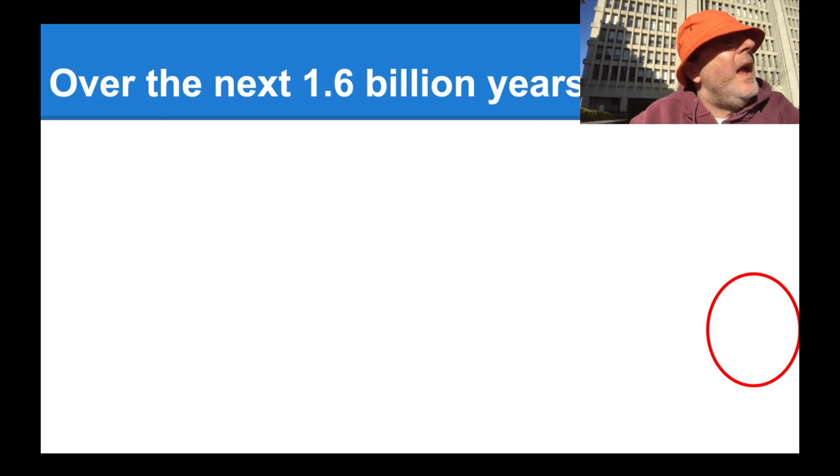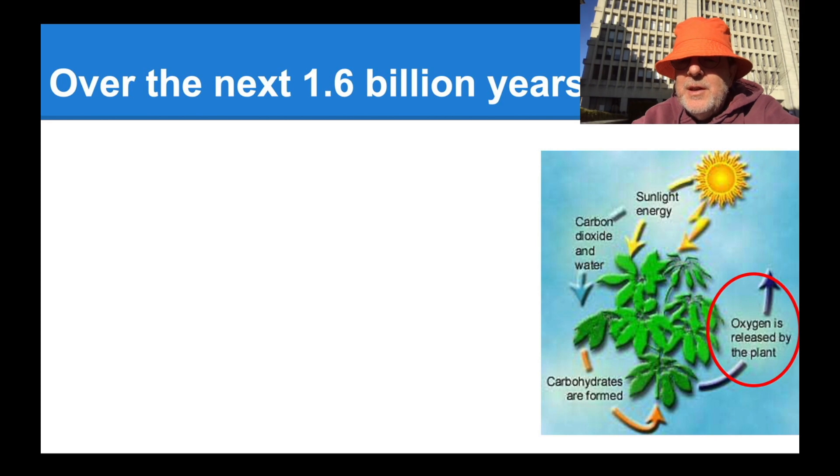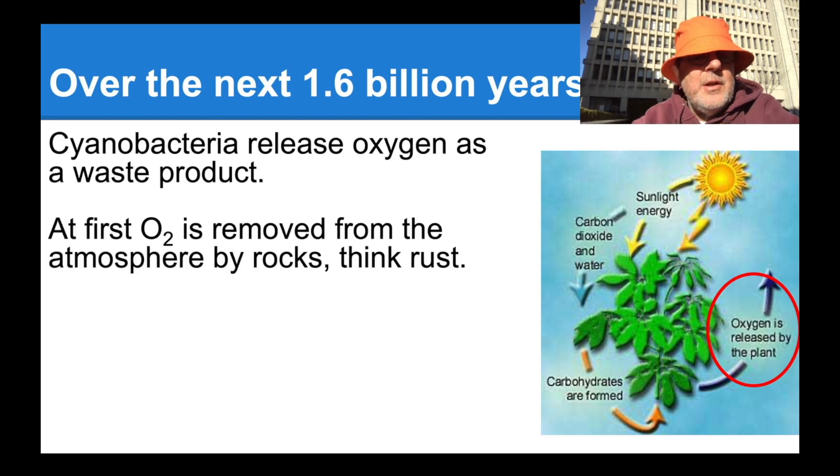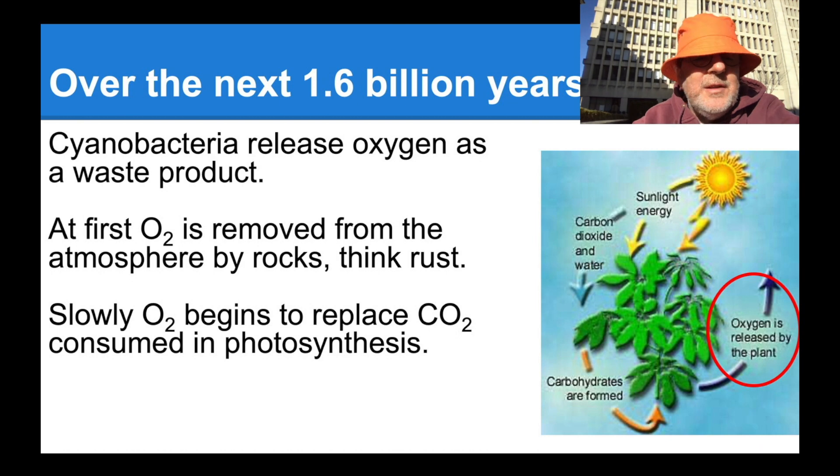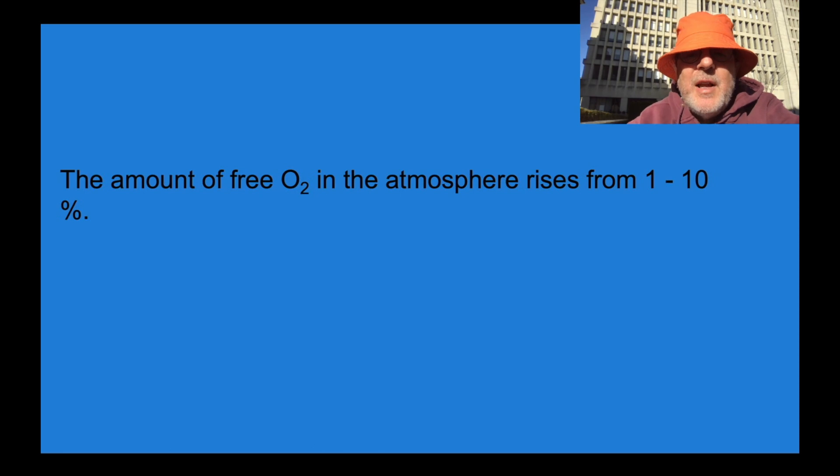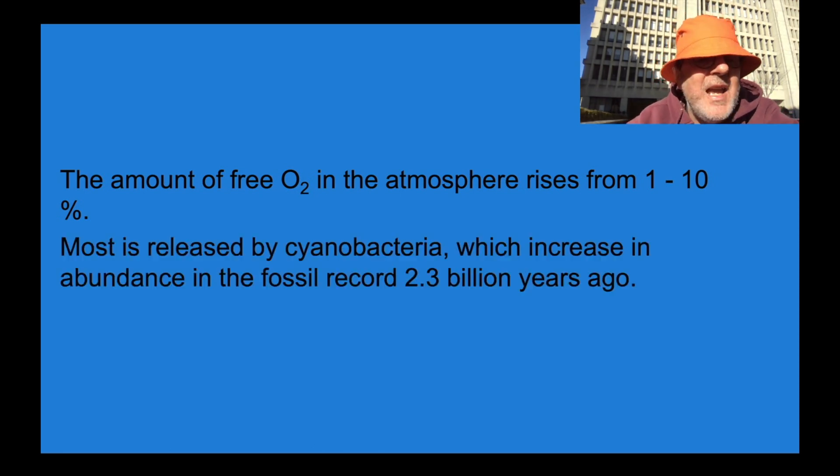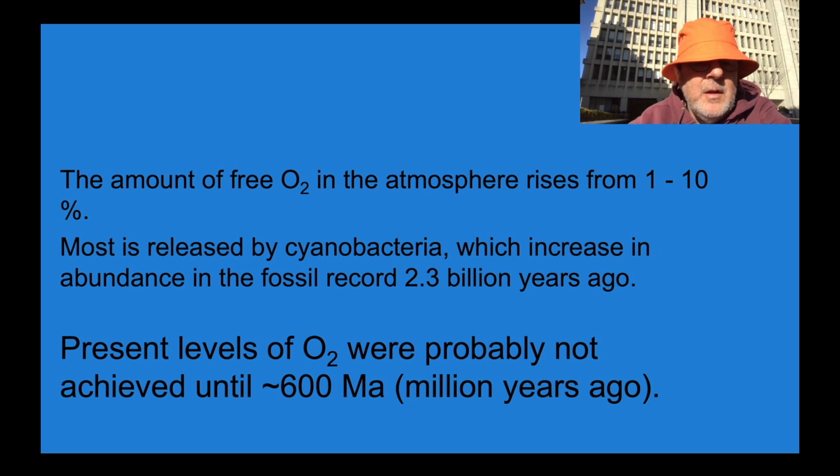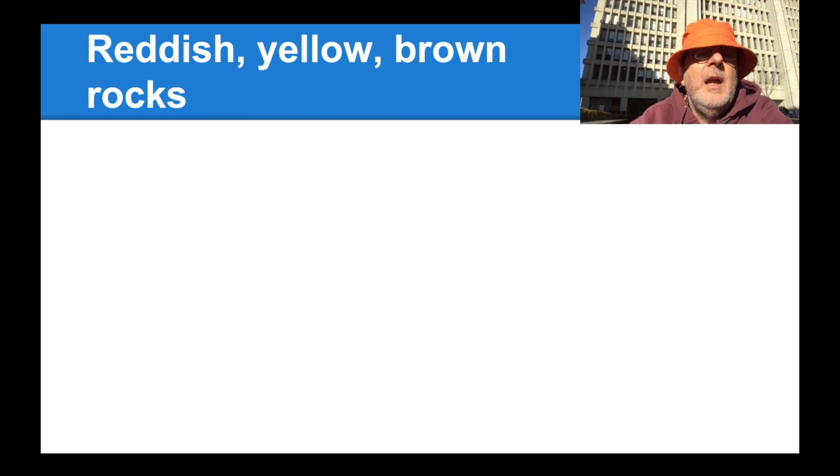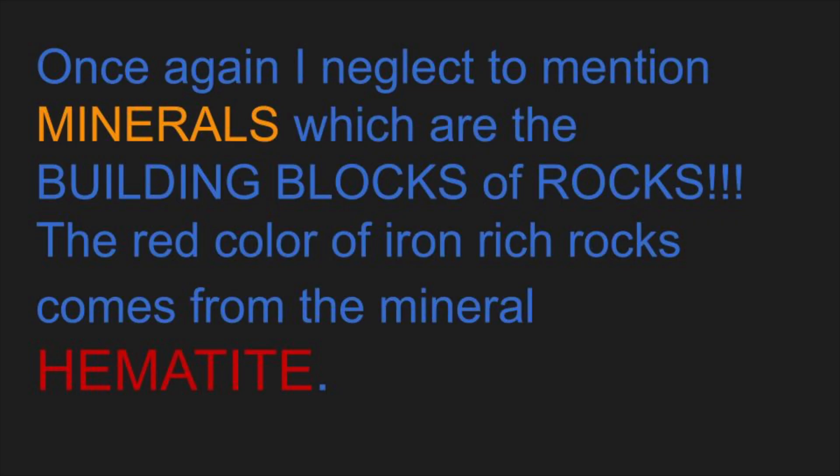So over the next 1.6 billion years, photosynthesis releasing oxygen as a waste product. At first, O2 is removed from the atmosphere by rocks. Think of rust. Slowly O2 begins to replace CO2 consumed in photosynthesis. The amount of free oxygen in the atmosphere rises from one to 10%. Most is released by cyanobacteria, which increase in abundance in the fossil record 2.3 billion years ago. The present levels of O2 were probably not achieved until about 600 million years ago. And of course, we know this from looking at rocks. So much of what we know about the earth is from looking at rocks.